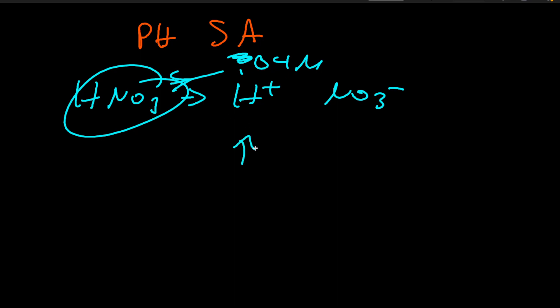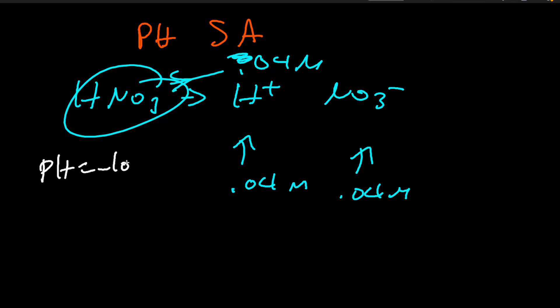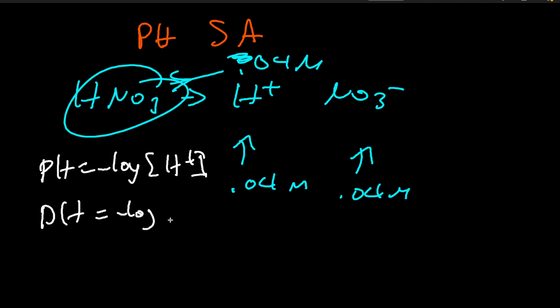So 0.04 M means the H⁺ concentration is also 0.04 M. All we have to do now is plug into the equation: pH equals negative log of [H⁺]. So pH equals negative log of 0.04, which gives us a pH of 1.39.